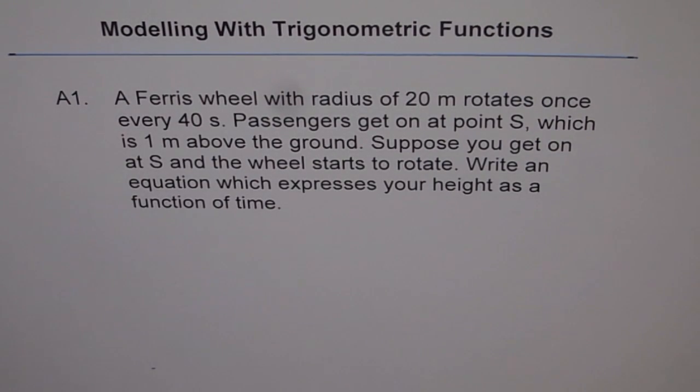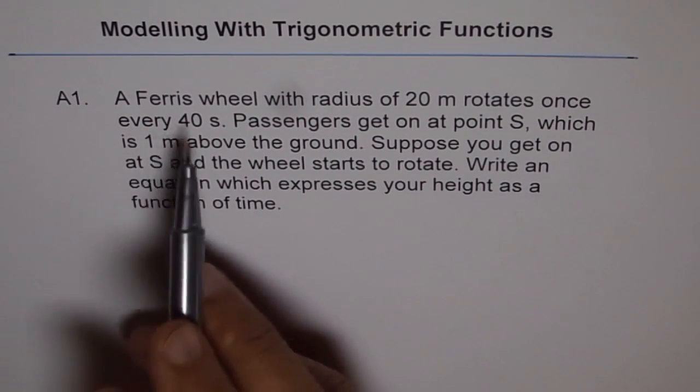Modeling with trigonometric functions is an application problem. A Ferris wheel with radius of 20 meters rotates once every 40 seconds. Passengers get on at point S, which is 1 meter above the ground. Suppose you get on at S and the wheel starts to rotate, write an equation which expresses your height as a function of time. This is a basic problem with Ferris wheel. It's an extremely important application which we are going to deal with.